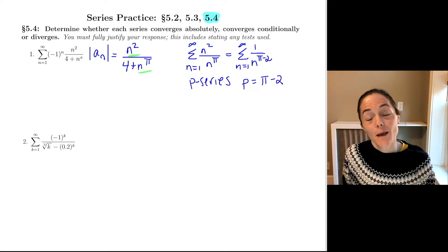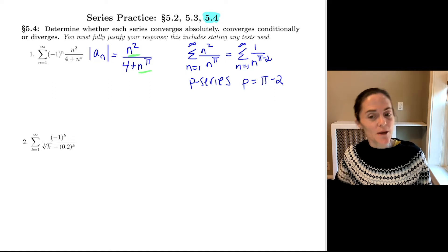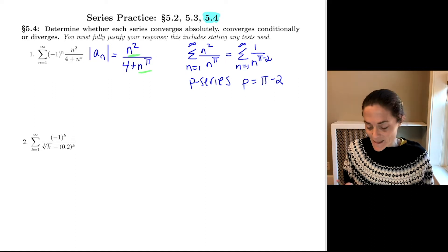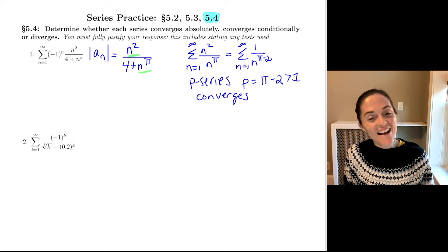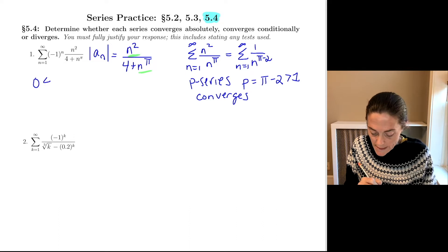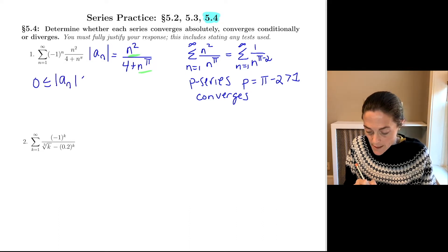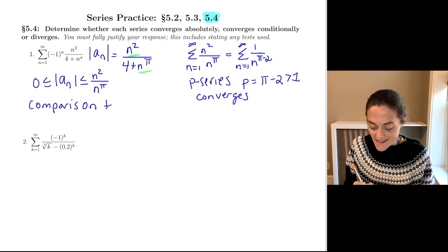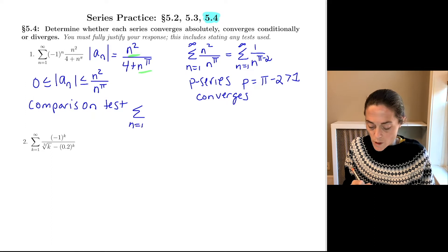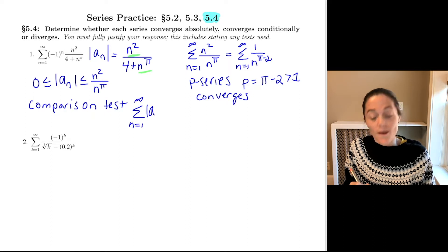This is a p-series where p is pi minus two. Pi is bigger than three — 3.14 and so on — so in particular, pi minus two is bigger than one. So this p-series converges. We have zero less than or equal to the absolute value of a_n, less than or equal to the terms of this convergent p-series. The comparison test tells us that the series of absolute values of a_n converges.